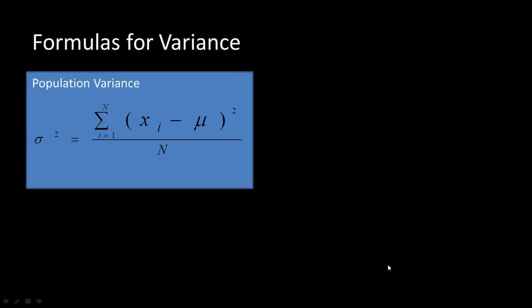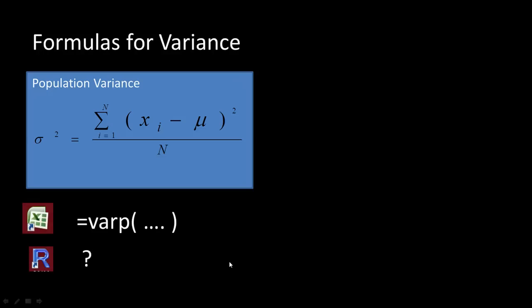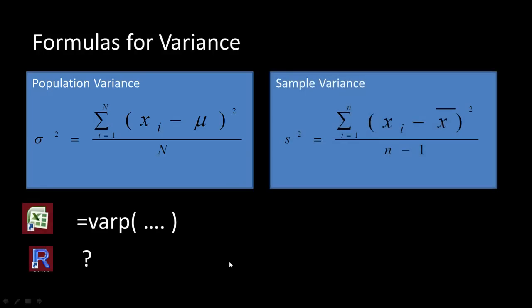The formula for variance: if it is the population, it is the sum of all individual observations minus the population mean, squared. The numerator is the sum of the squared deviations. The denominator is n, the population size. For the sample, the denominator is n-1.